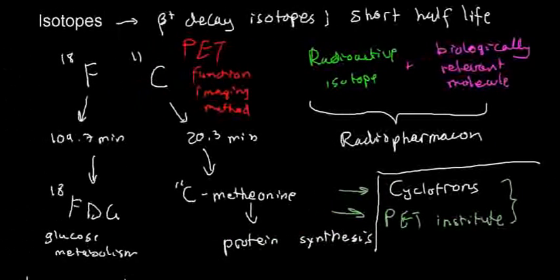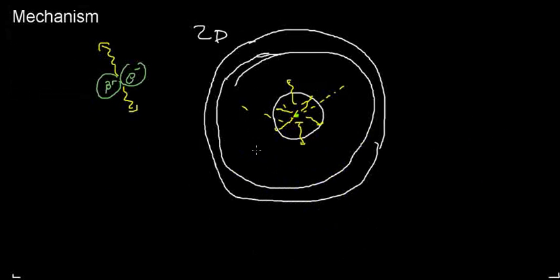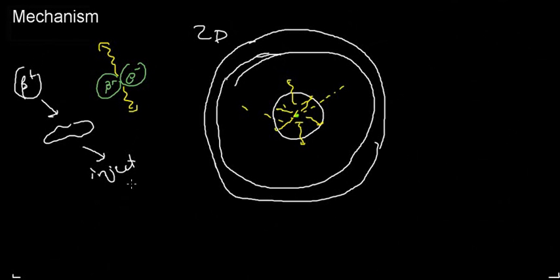If you want to focus on an essay or open question about defining the mechanism of positron emission tomography: We're using beta positive decaying isotopes paired to biologically relevant molecules. These come from a cyclotron if you want to show off and say you remember where they come from. We inject those into the patient. They have a short half-life.